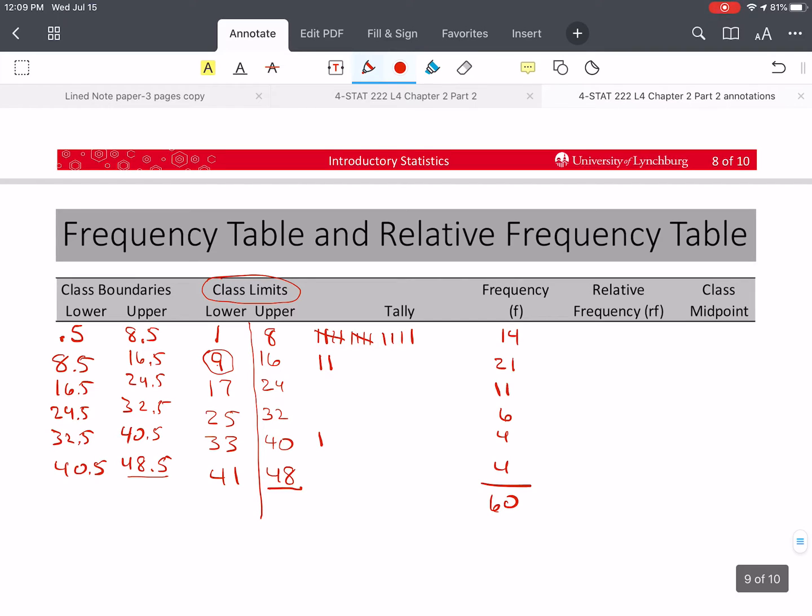So now, how do we calculate our relative frequency? Well, the relative frequency is equal to the frequency over n, which is our total number of data values. And so I'm going to draw a line here across. And so we tally the, or we total the frequency. And these f's are frequency. And so 60 is the n. So all of these values for this table are going to be f over 60. And so I have 14 divided by 60. And I'm going to round this to three decimal places, which gives me .233. And then I have 21 divided by 60. And that's .35.